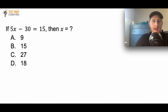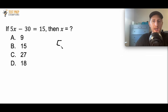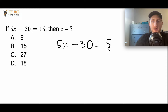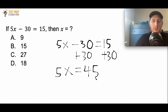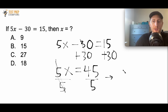Here's another example: if 5X minus 30 equals 15, then X equals what? The first step is to add 30 to both sides. Once I rewrite, I have 5X equals 45 because 15 plus 30 is 45. Now I divide by 5 on both sides — the 5s cancel out on the left, leaving just X. So X equals 9. A is the correct answer.